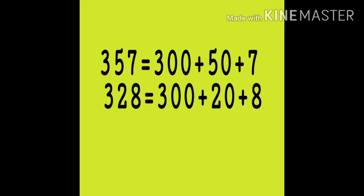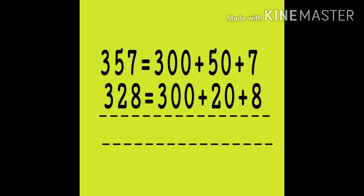Using the expanded form of numbers. Let's expand the numbers as we have already learnt how to expand numbers. 357 equals to 300 plus 50 plus 7. And 328 equals to 300 plus 20 plus 8. So, the sum of 300 plus 50 plus 7 and 300 plus 20 plus 8 will be the same as 357 plus 328.